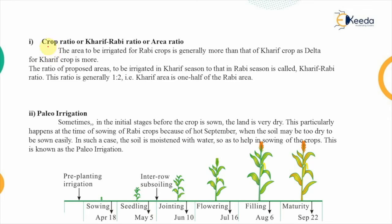The first term we are going to discuss is the crop ratio, which is also known as the kharif-to-rabi ratio or the area ratio. Each crop can be grown in a certain area depending upon the season. The depth of water required by different crops is known as the delta of the crop.